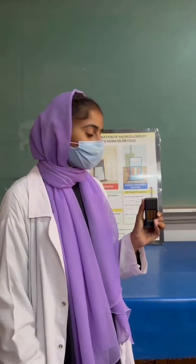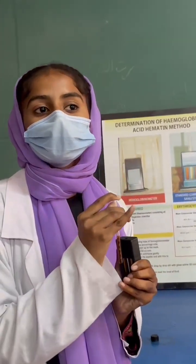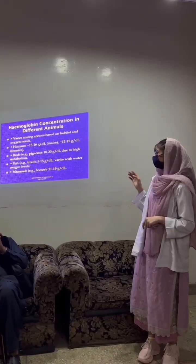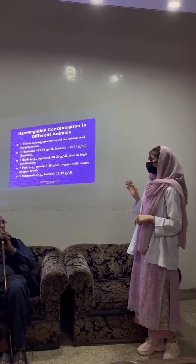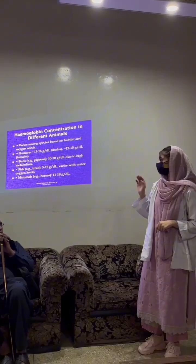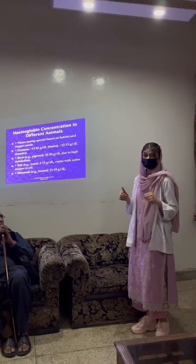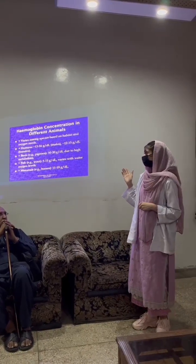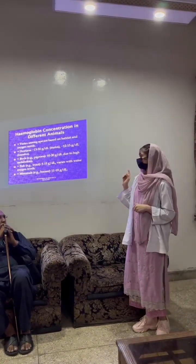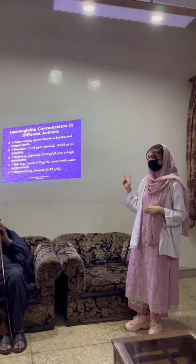The result of our practical is 12.5 gram per deciliter, which means it is normal. Now, hemoglobin concentration varies among different animals based on their habitat and oxygen needs. In humans, it contains approximately 13 to 16 gram per deciliter in males, and in females, 12 to 15 gram per deciliter.